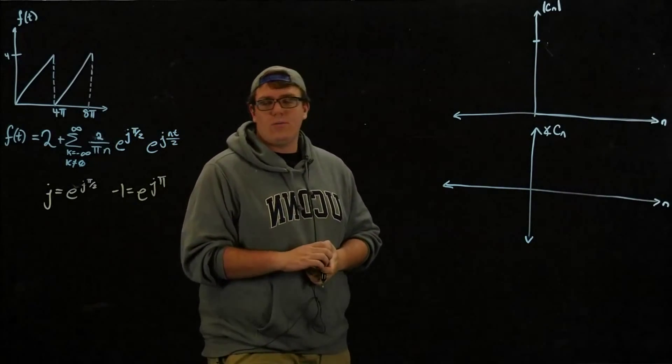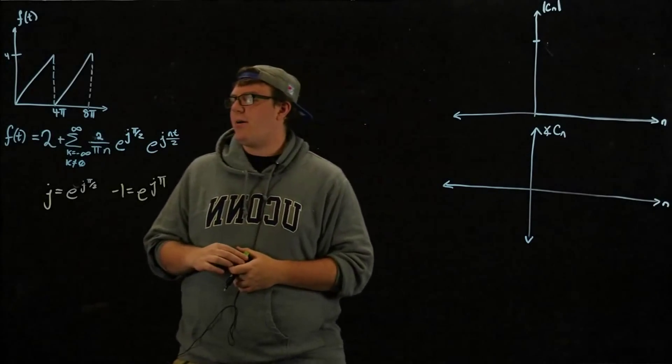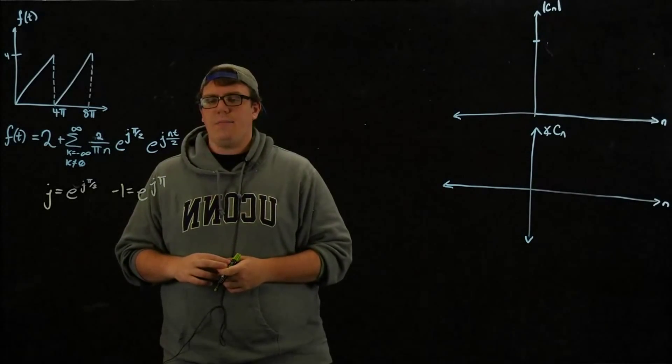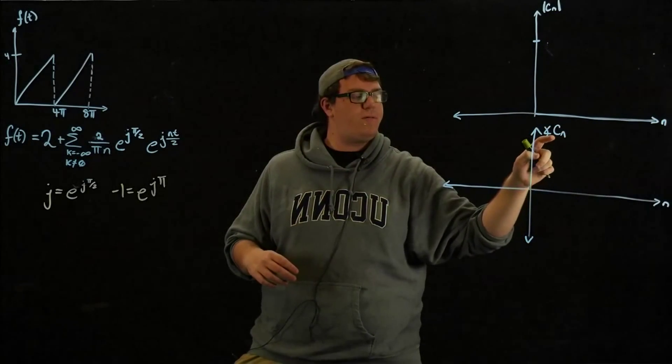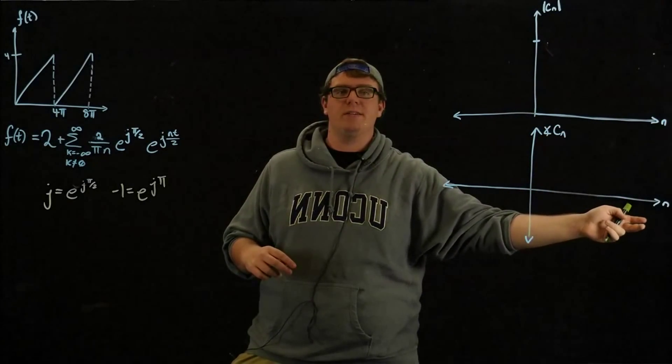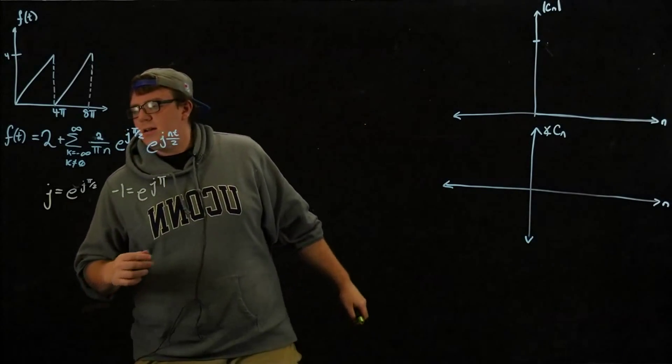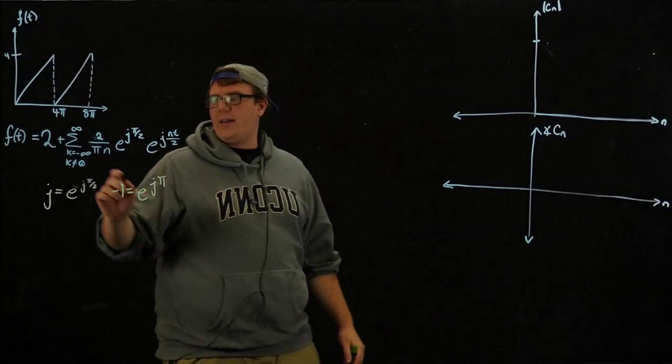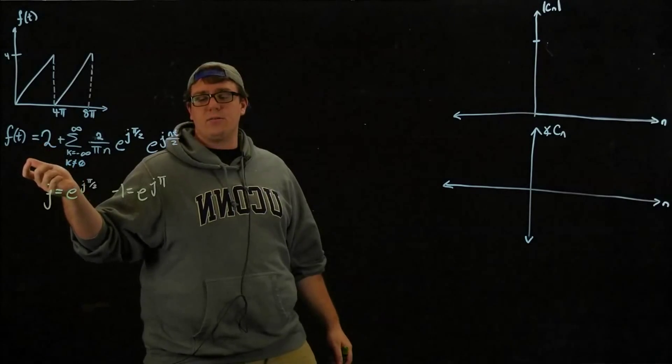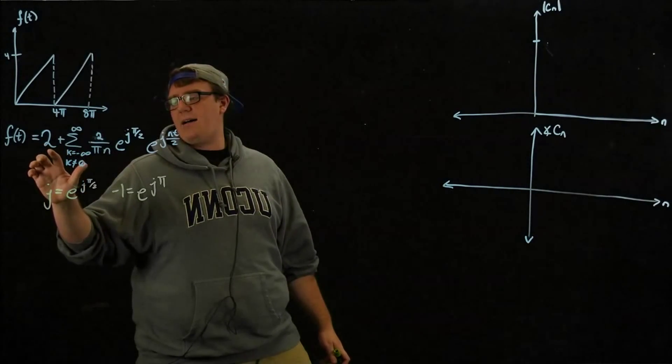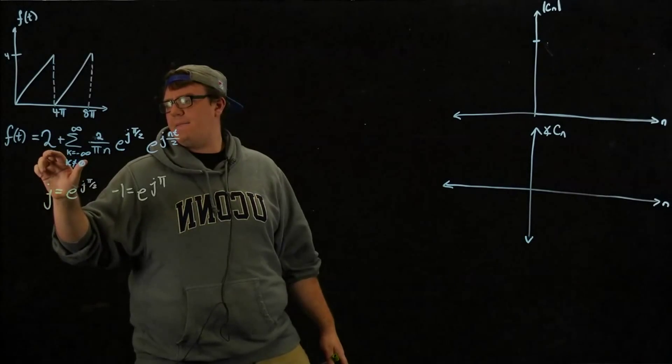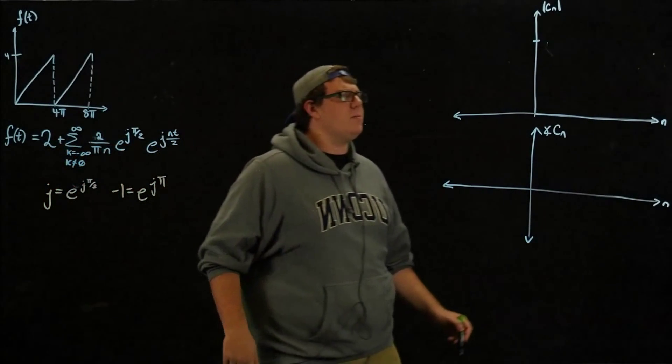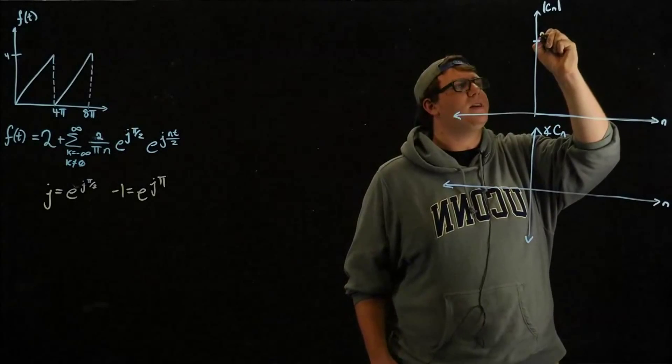So what we're going to do here is we're going to plot the magnitude of CN versus N, and also the phase angle of CN versus N. So we know that at our N equals 0 component, we just have our K equals 0 component. We just have 2. So we know this guy is at an initial height of 2.